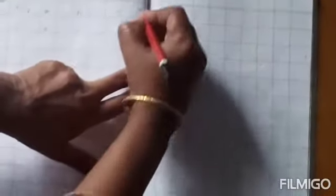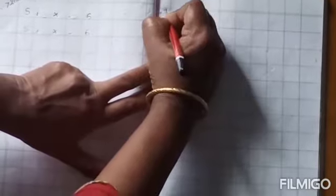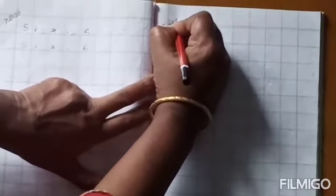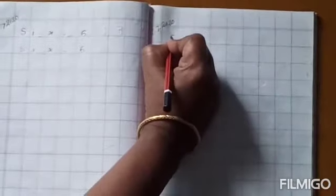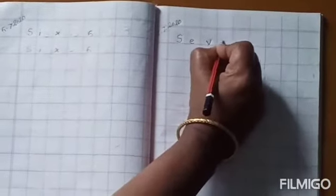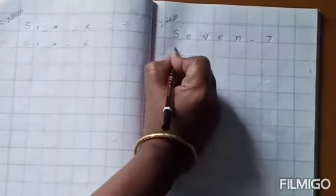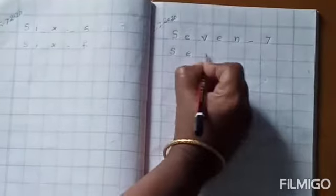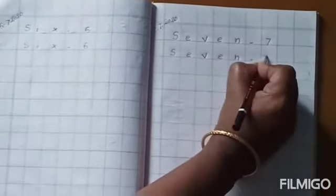And first we will write date in the first two lines. Today's date is 7 July 2020. Then write seven: S-E-V-E-N-7. Once more, S-E-V-E-N-7.